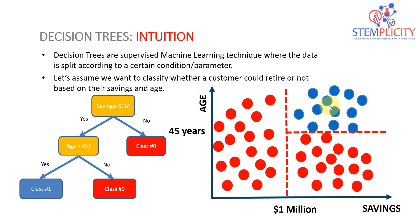Simply put: if you have one million dollars in savings and your age is 45 or above, then you are good to go — you are eligible to retire. Otherwise, you still have a bit more to go — either increase your savings or get a little older. If your age is less than 45, you'll be categorized as class zero.